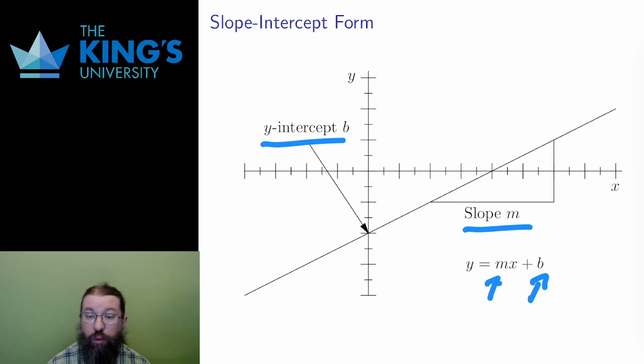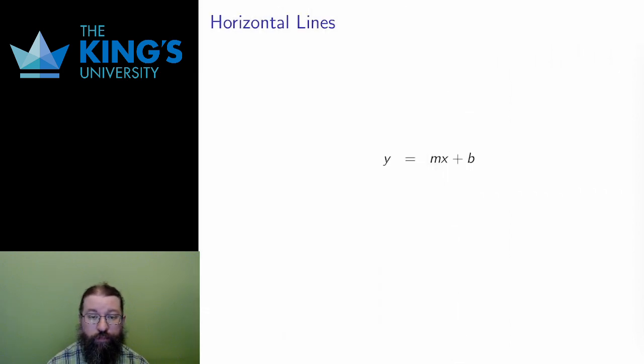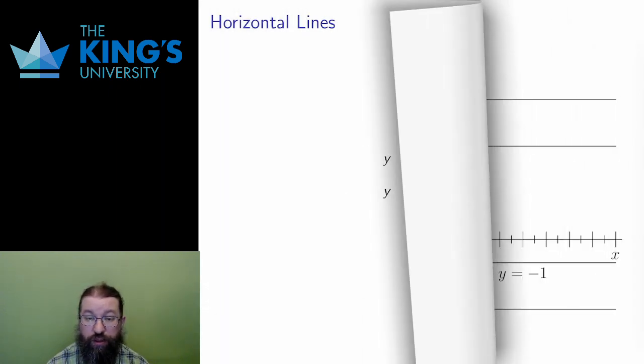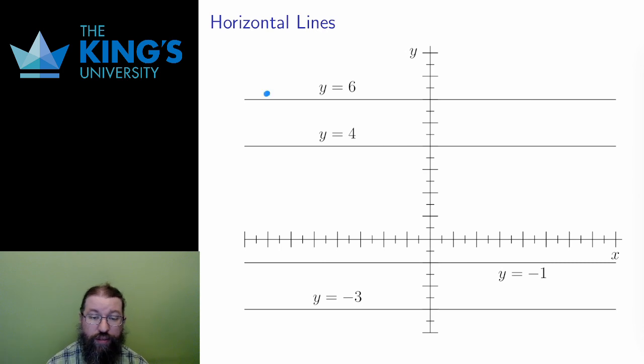However, before I finish this video, I want to talk about the special case of horizontal or vertical lines. Let me start with the slope-intercept form, y equals mx plus b. A horizontal line has a slope of 0. If m equals 0, then this just becomes y equals b. All horizontal lines have this simple form, and here are some examples. The horizontal lines at y values 6, 4, negative 1, and negative 3.